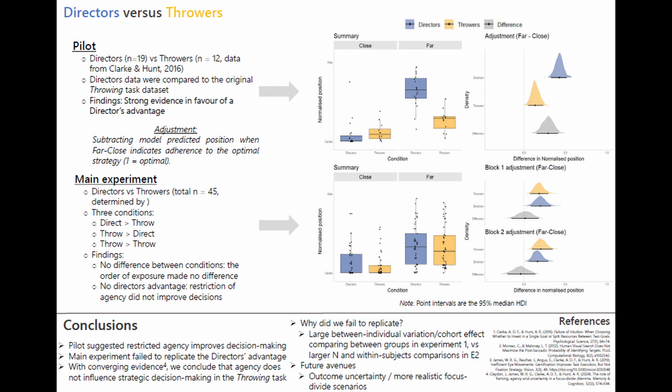Our pilot experiment compared a new set of directors data to the existing throwers data set from 2016. The comparison indicated a strong director's advantage. Comparing standing position choices between close and far hoops, directors adjusted their position more than throwers, approaching the optimal strategy.